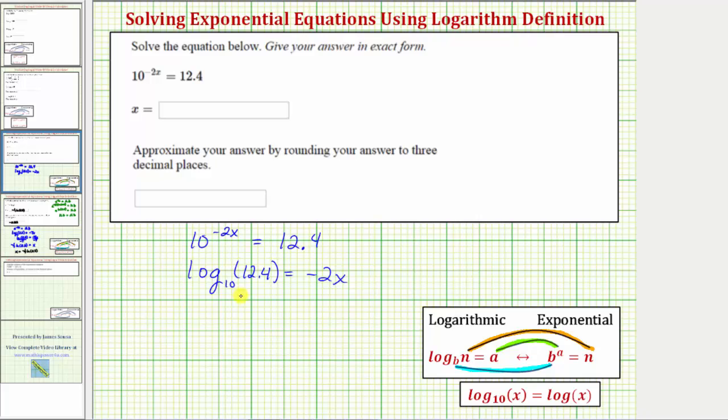And again, because we have log base 10, this is common log. So if we want to, we can rewrite this as just log of 12.4 equals negative 2x. Notice in this form, we can easily solve for x by dividing both sides by negative 2.